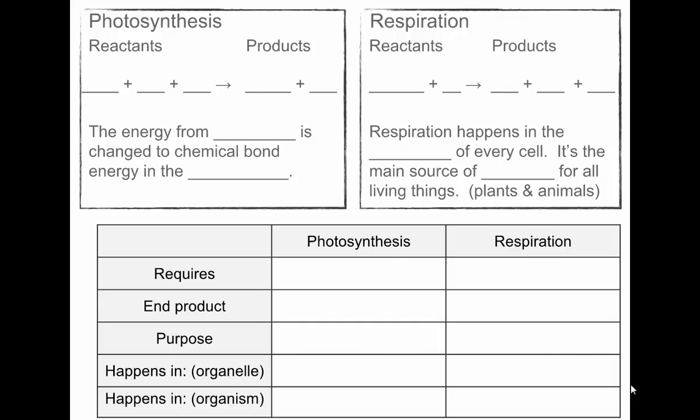To wrap up and summarize: Brianna gives the equation for photosynthesis — light, water, and carbon dioxide yield glucose and oxygen. In photosynthesis, energy from light (usually sunlight) is changed into chemical energy stored in glucose. This happens in the chloroplasts — that's the organelle where photosynthesis takes place.